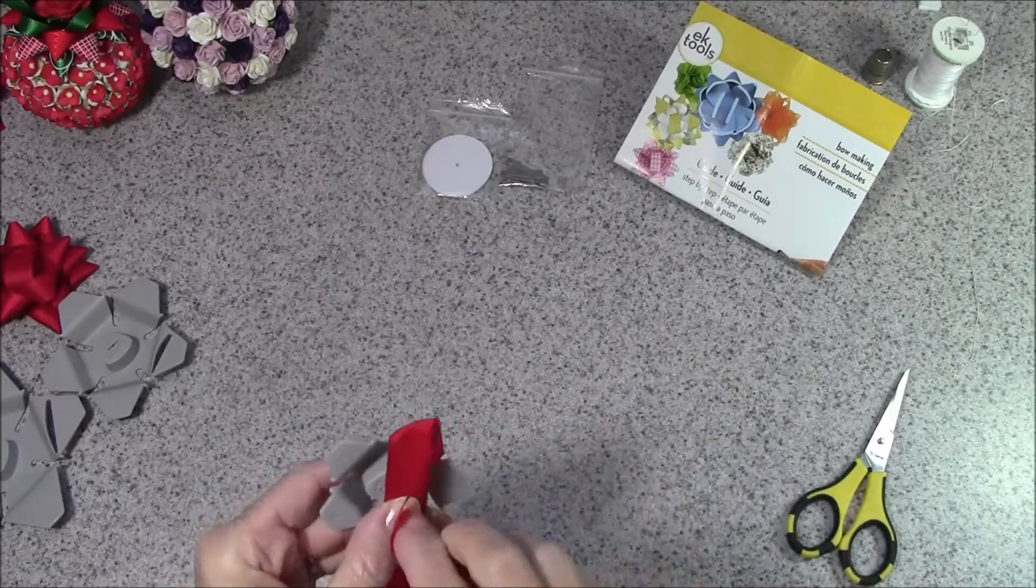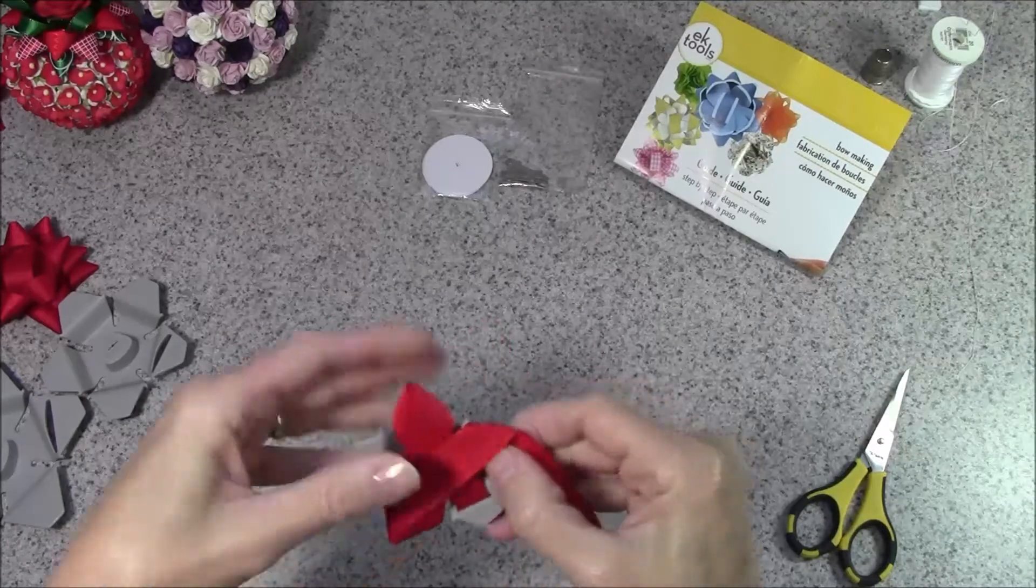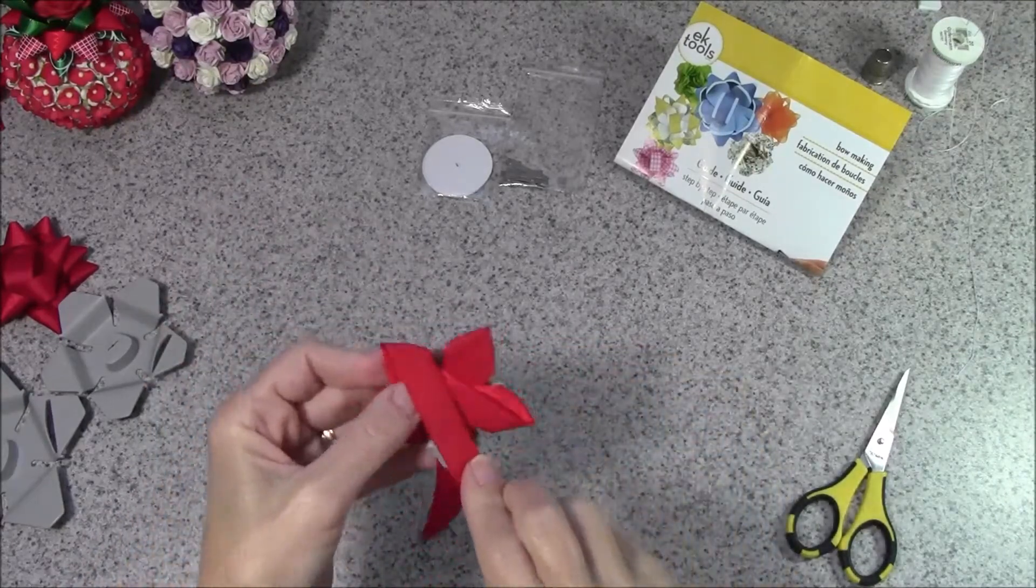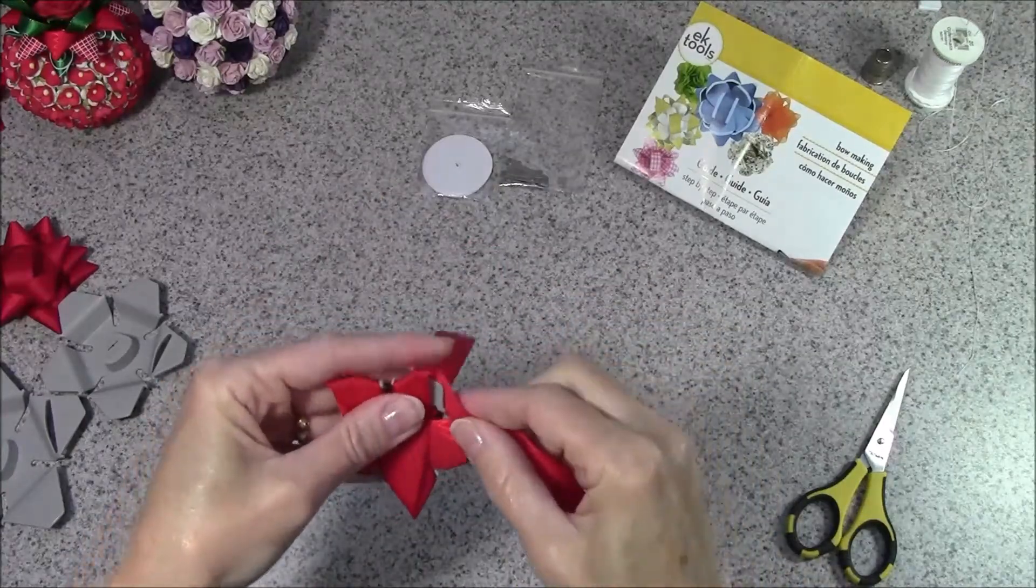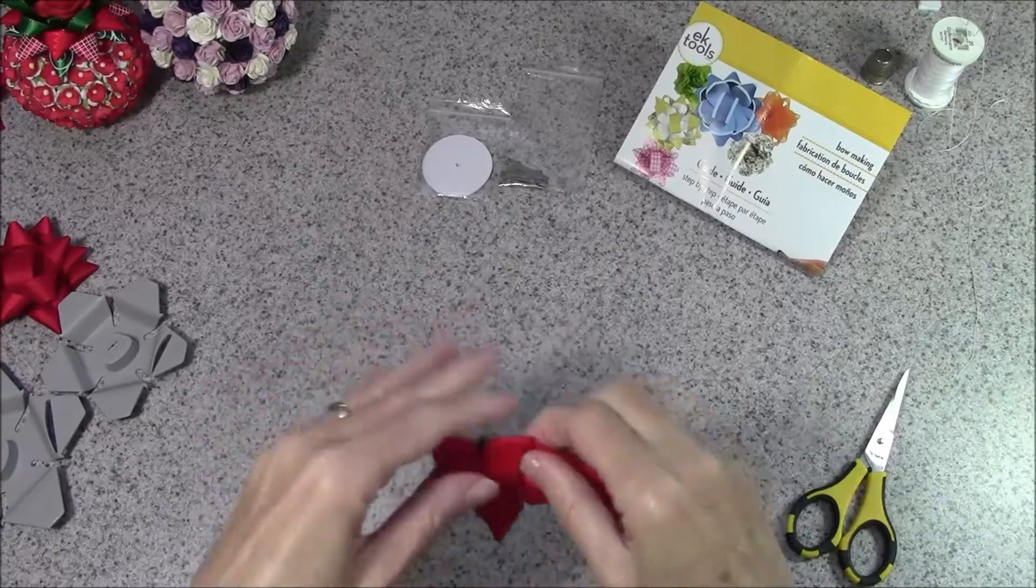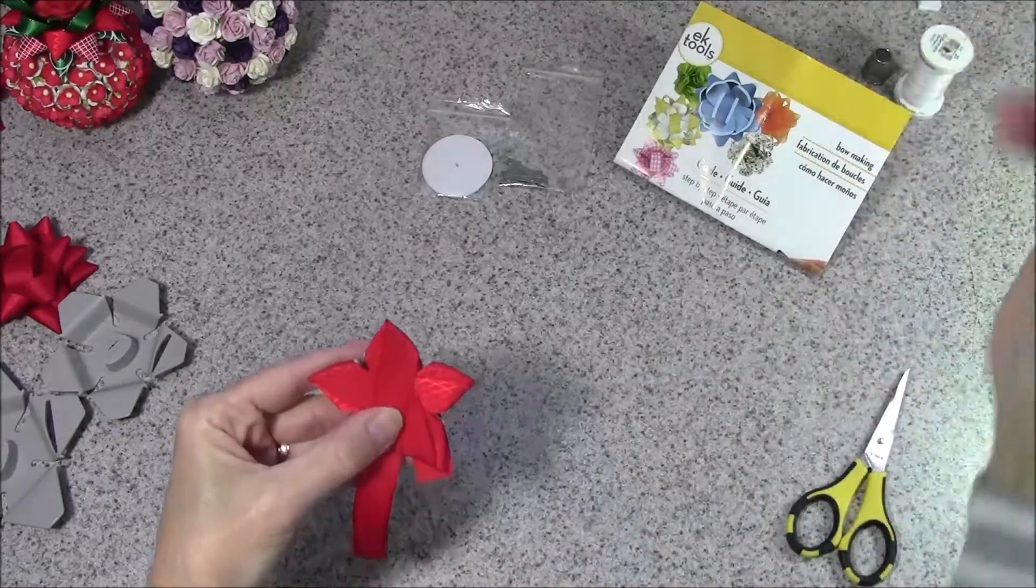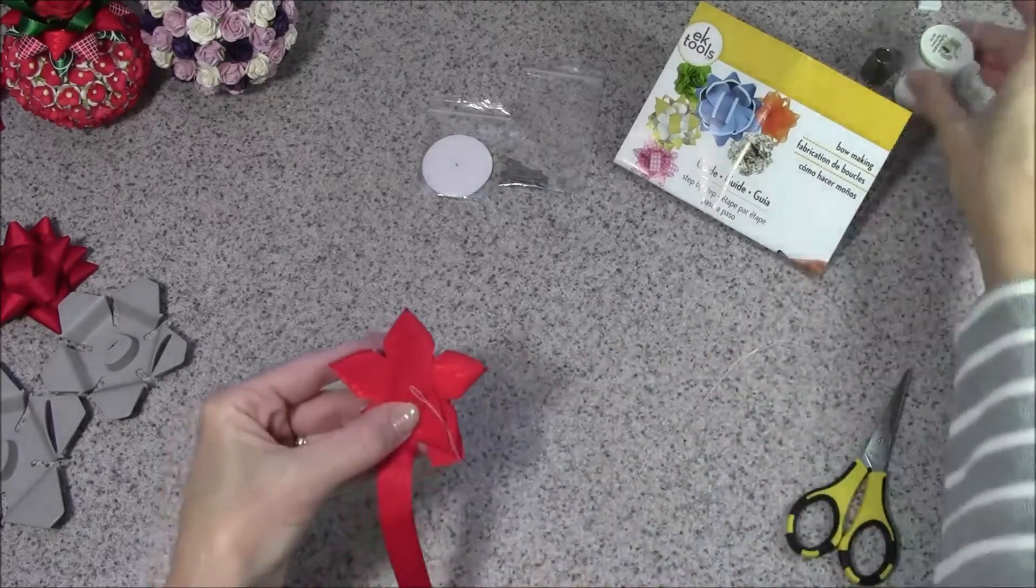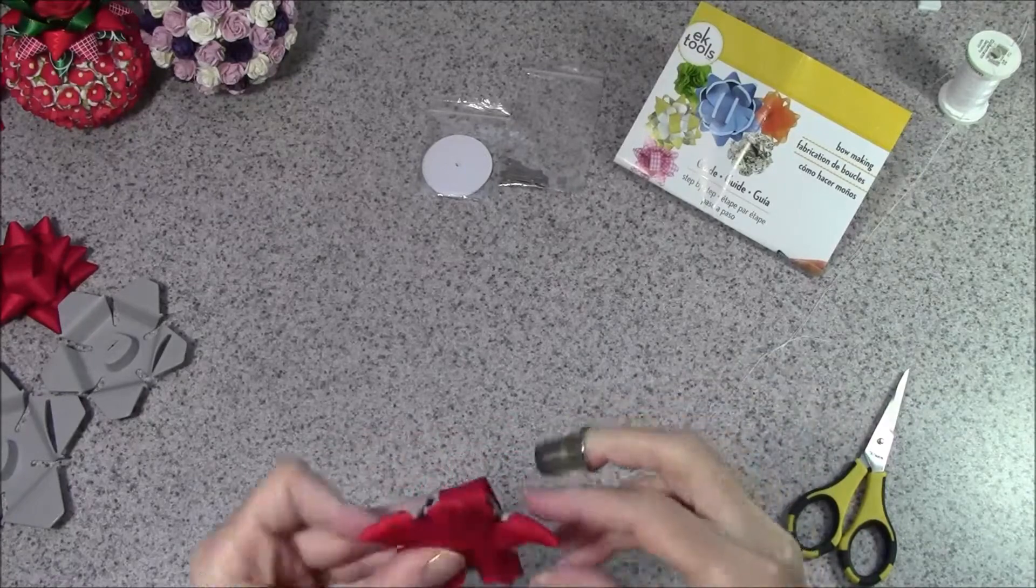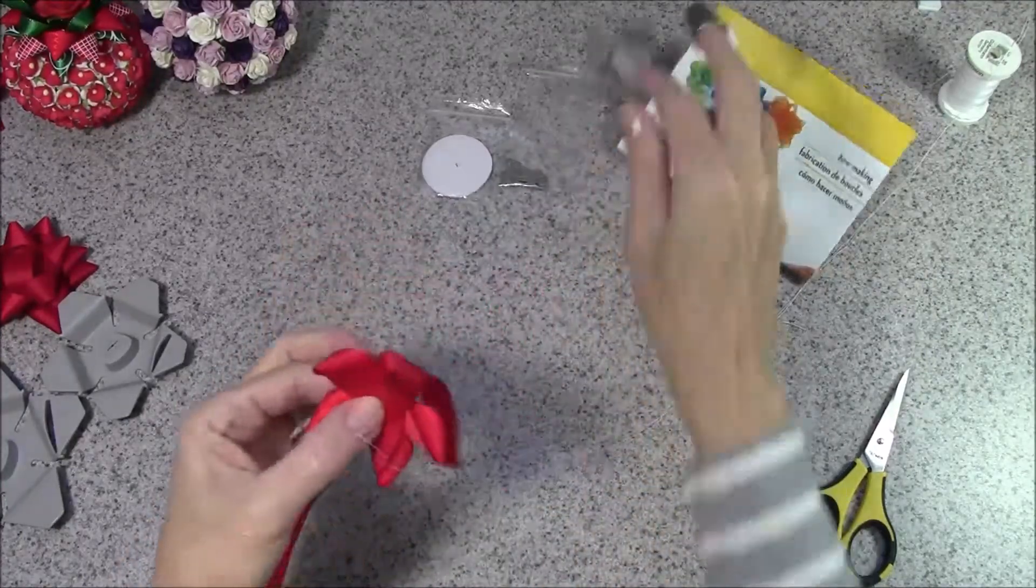So for this one I'm just going to do two loops on each one, and rather than piercing the center, once you get through the first two it kind of holds just from having the layers on top of it. You don't even have to hold it, it's not going to come undone. So one more time around and back to the center. And I just took a needle and thread, and it helps to have a thimble too because you're going through a lot of thickness. And you can even, as long as you pinch the center, take it right off there.